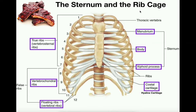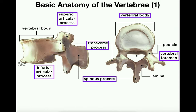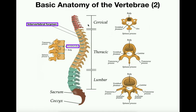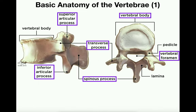Now let's look at the basic anatomy of the vertebrae. There are three sections: cervical vertebrae at the top — there are seven; thoracic vertebrae in the middle — there are 12; and five lumbar vertebrae at the bottom. A mnemonic to remember the counts: think of meal times for someone with an 8 a.m. class — breakfast at 7, lunch at 12, and dinner at 5.